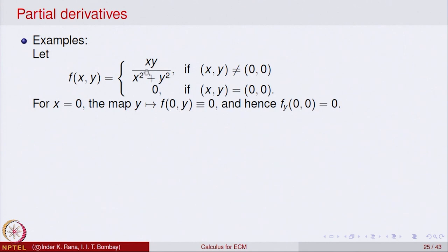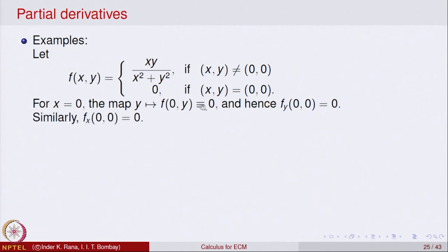When x is fixed at 0, the function becomes 0·y / y² = 0, so as a function of y it is identically the constant function zero, and its derivative is 0. Similarly, when y = 0 the function is again identically zero, so the partial derivative at (0,0) is also 0. Both partial derivatives at (0,0) exist and are equal to 0.